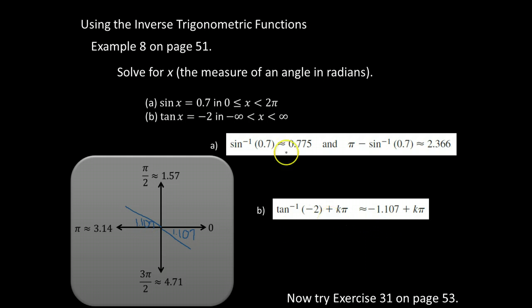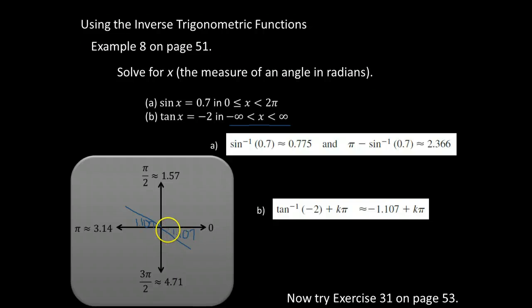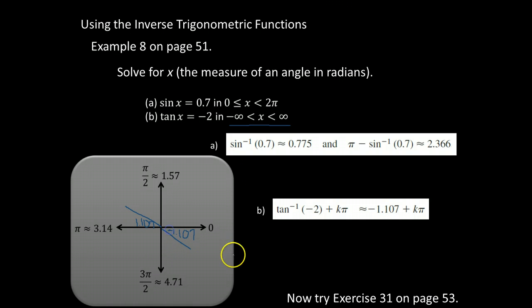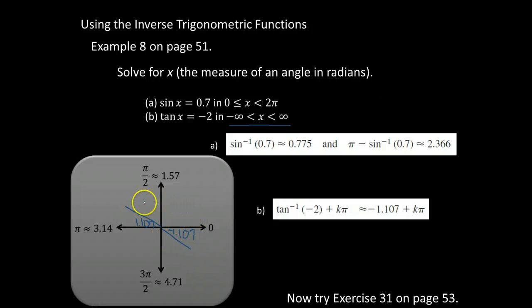And we happen to be now - our interval is negative infinity to infinity. So we can keep going around and around and around forever. So the way we're going to write this is we're going to take this -1.107, and I forgot my negative there. And what we're going to do is we're going to add kπ to it, which really means we're going to take our intervals of π and we're subtracting this 1.107.